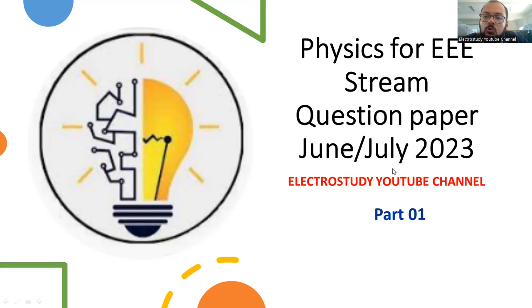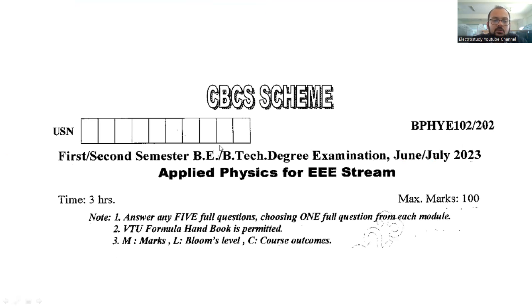This session mainly focuses on how to answer those particular questions. I'll be giving some shortcuts you can prepare accordingly. This question paper actually appeared in June/July 2023. The title is Applied Physics for triple E stream and the weightage is 100 marks. You can note down the subject code and prepare accordingly.